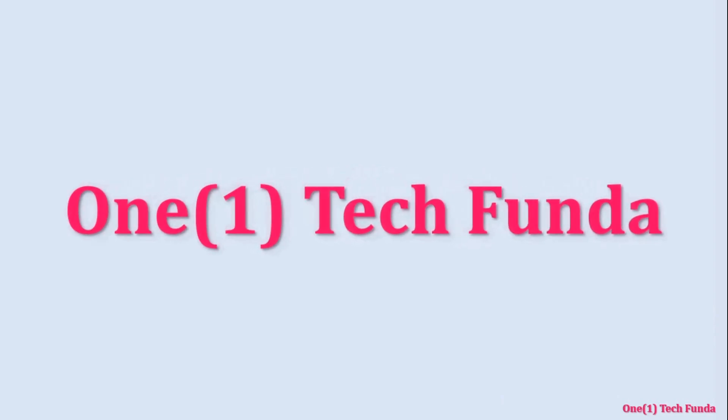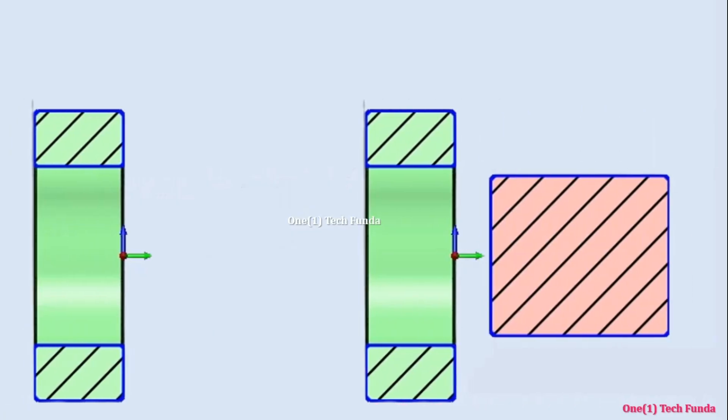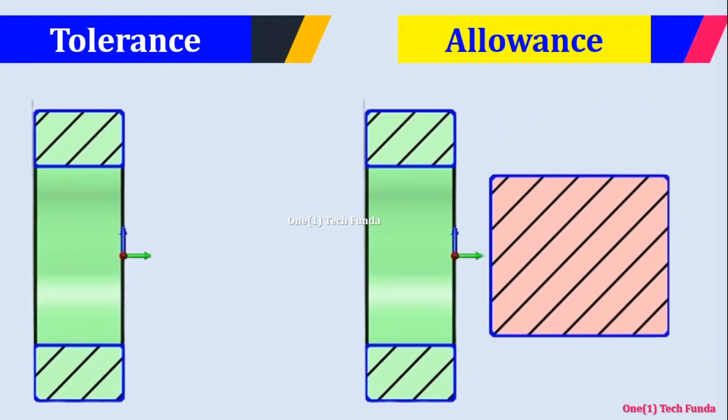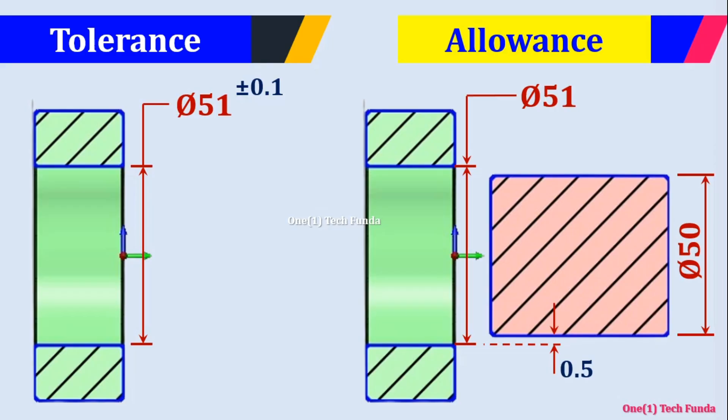Hello everyone. Welcome to OneTechFunda. Today we will discuss two crucial concepts in engineering: tolerance and allowance. These play a vital role in manufacturing, GD&T, and ensuring proper fit between components. So let's start.